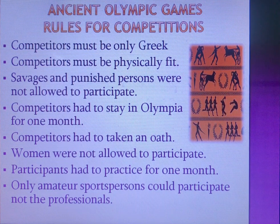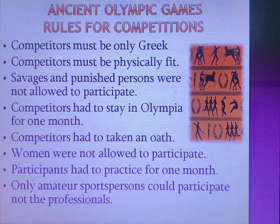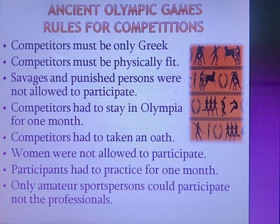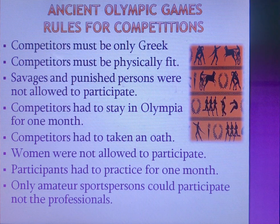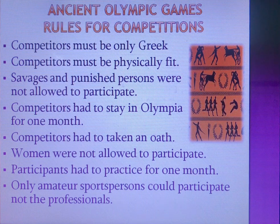Now we are going to learn about the rules for participation in Ancient Olympic Games. The first rule was that competitors must be Greek only — no other nation's athletes could participate. The next rule was that Greek competitors must be physically fit. Another rule was that criminals and punished persons were not allowed to participate — the character of the sportsperson was very important. The next rule was that competitors had to stay in Olympia for at least one month.